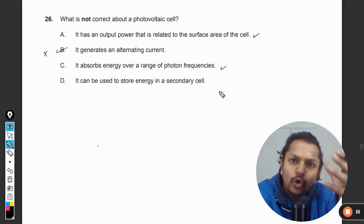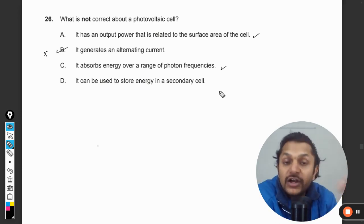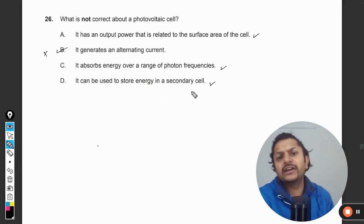The solar light should come and fall on the cell, so there is a range of photon frequencies that are valid. It can be used to store energy in a secondary cell. Absolutely correct.